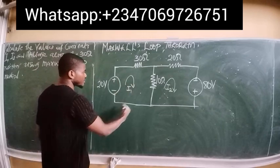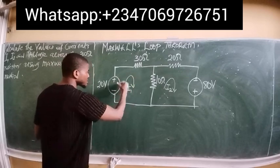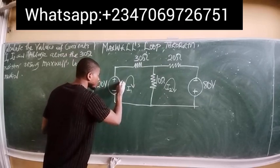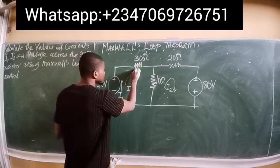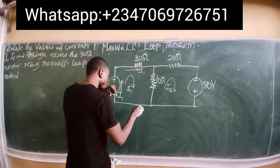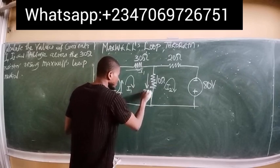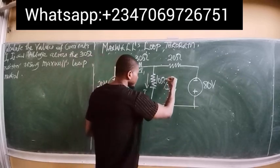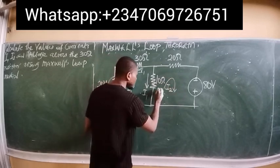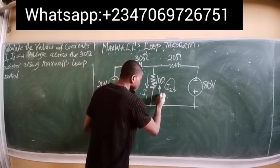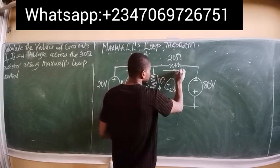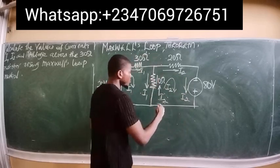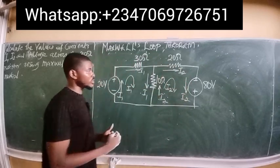We have the direction of the currents as can be seen on the circuit. Current I1 flows through the first loop in this direction throughout the circuit. For the second loop, current I2 flows in that manner as well — through this resistor as I2, also in this direction through the next resistor as I2, and continuing around. So this is loop 1 and this is loop 2.